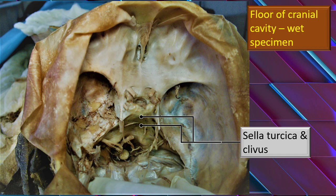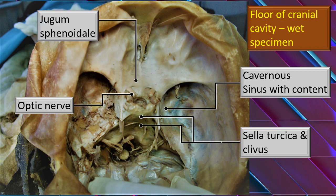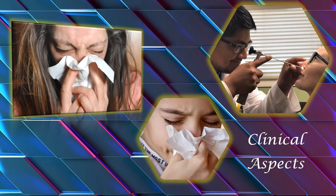This is a superior view — that is, a view from the floor of the cranial cavity — on a wet specimen. You can see along the posterior part of the pituitary fossa, the sella turcica and its slope posteriorly, the clivus, which virtually forms the posterior wall of the sphenoid sinus. Laterally, the cavernous sinus and its contents. Anteriorly and laterally, the optic nerve in the optic canal, and a little bit of the jugum sphenoidale immediately anteriorly.